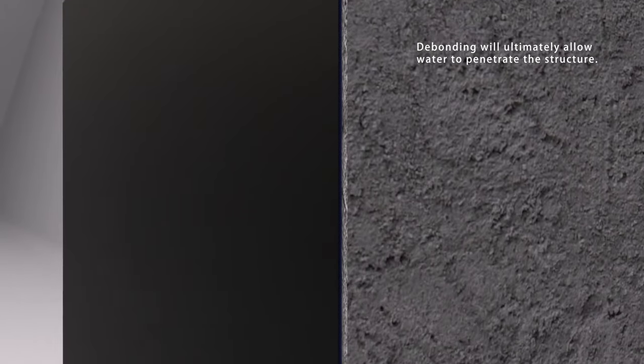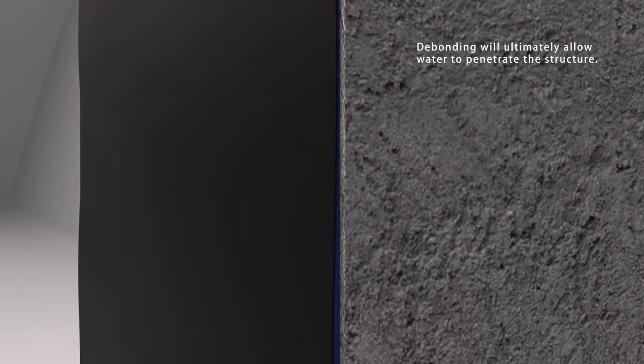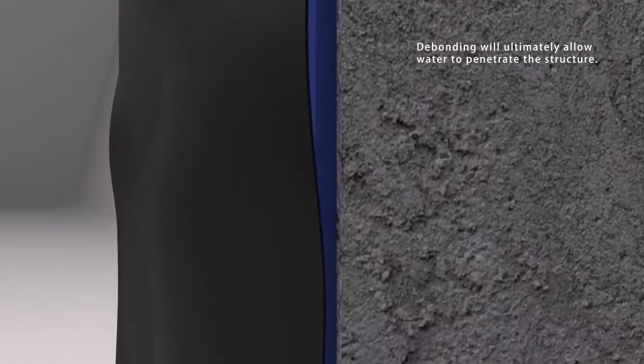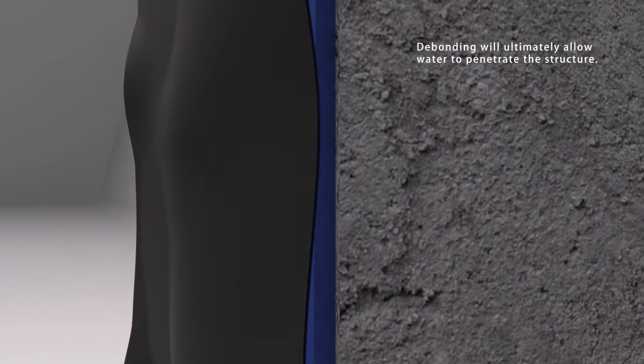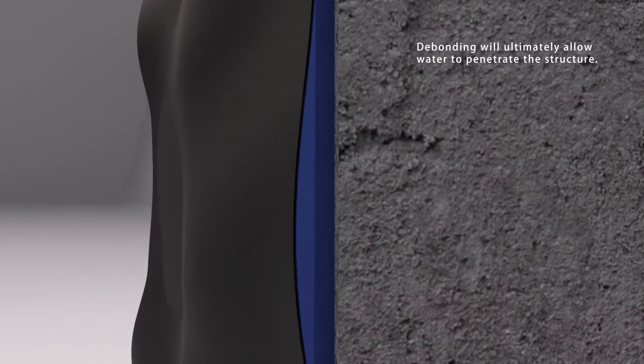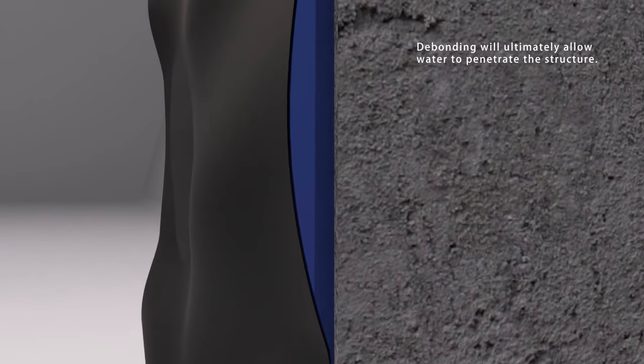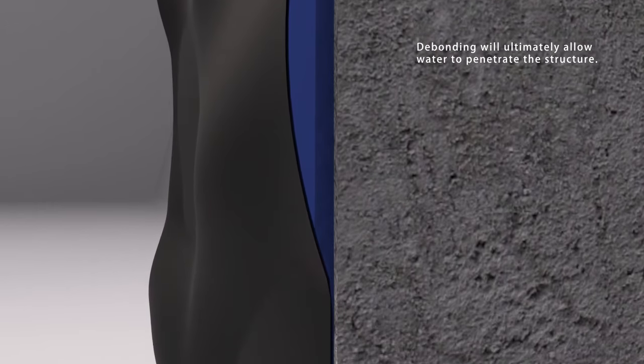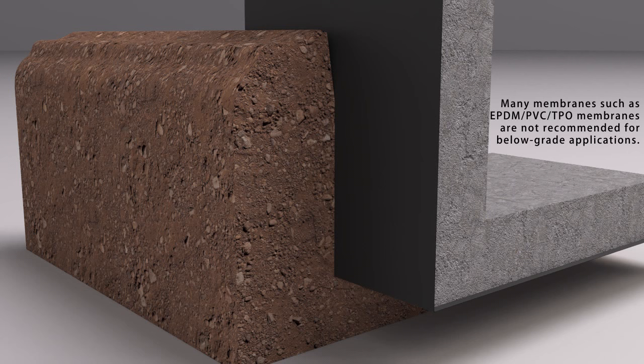Debonding of the waterproofing membrane will allow water migration between the membrane layer and the surface and ultimately into the concrete. For membranes to be considered for underground waterproofing applications, international standards require the membrane to be fully adhered to the substrate.